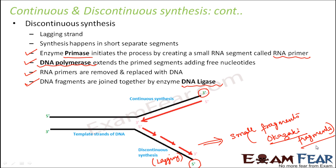On the lagging strand, DNA polymerase cannot directly do synthesis because it needs a free three-prime hydroxyl end. It gets this on the leading strand but not on the lagging strand. Therefore it cannot initiate the process on the lagging strand — it needs enzyme primase to initiate. Primase creates a very small RNA fragment which has a free hydroxyl end, and then DNA polymerase starts adding free nucleotides to that free hydroxyl end.